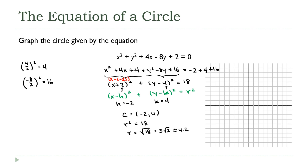So I'll graph this the same way. I'll go over negative 2, up 4. There's my center. Then I'll go a little more than 4 in every direction. Right, down, left...